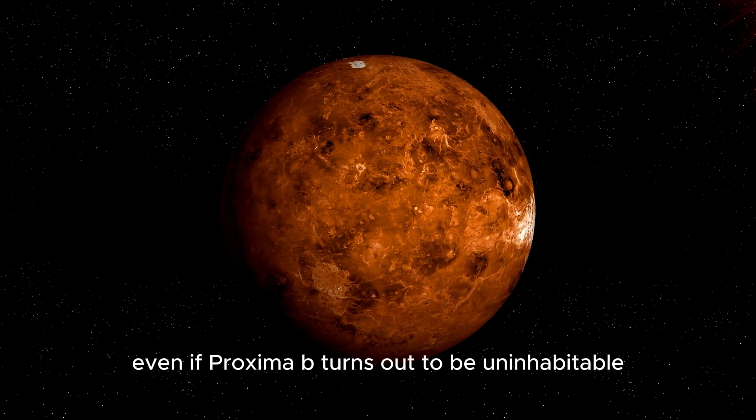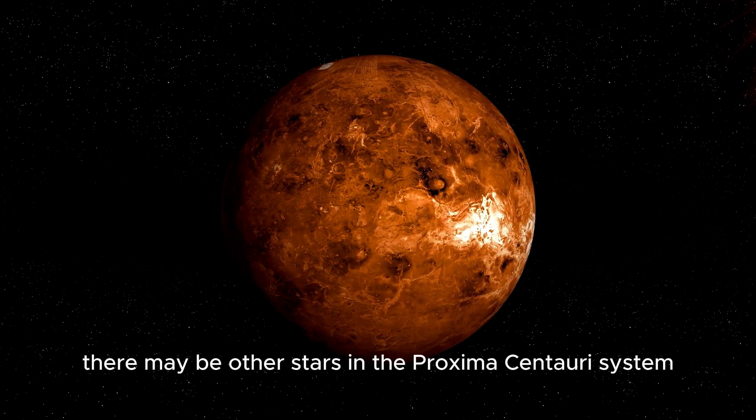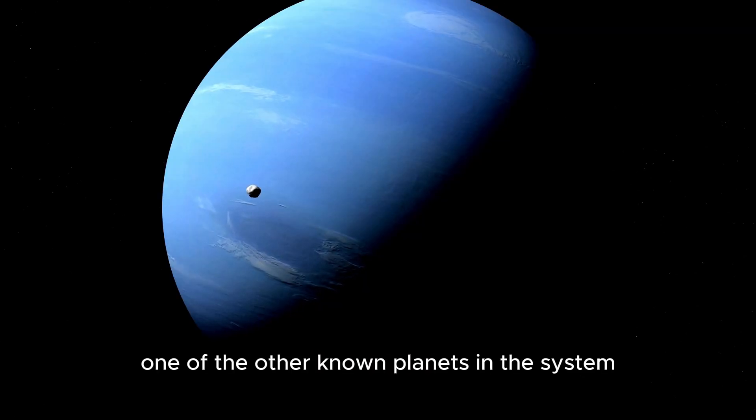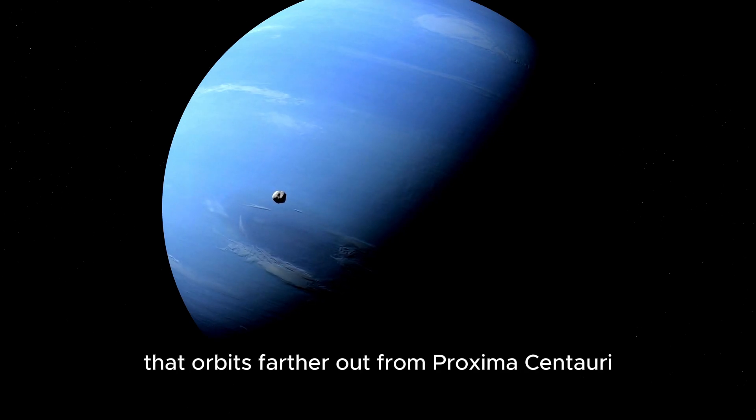Even if Proxima b turns out to be uninhabitable, there may be other stars in the Proxima Centauri system with planets that could potentially support life. One of the other known planets in the system is Proxima C, which is a super-Earth-sized planet that orbits farther out from Proxima Centauri.